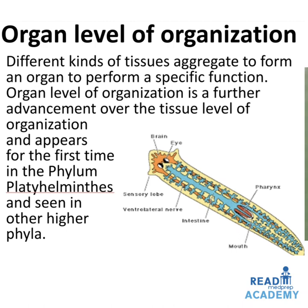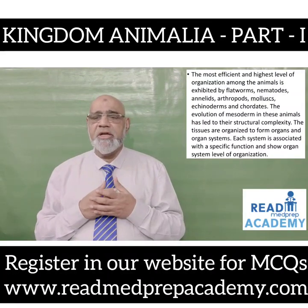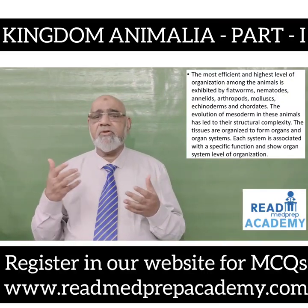Organ level of organization: different kinds of tissues aggregate to form an organ to perform a specific function. This is a further advancement over the tissue level and appears for the first time in phylum Platyhelminthes, and is seen in other higher phyla. In the image you can see the flatworm which has a mouth, the pharynx, the intestine, ventrolateral nerve cords, sensory lobes, the eyes and the brain. The most efficient and highest level of organization is exhibited by flatworms, nematodes, annelids, arthropods, molluscs, echinoderms and chordates.